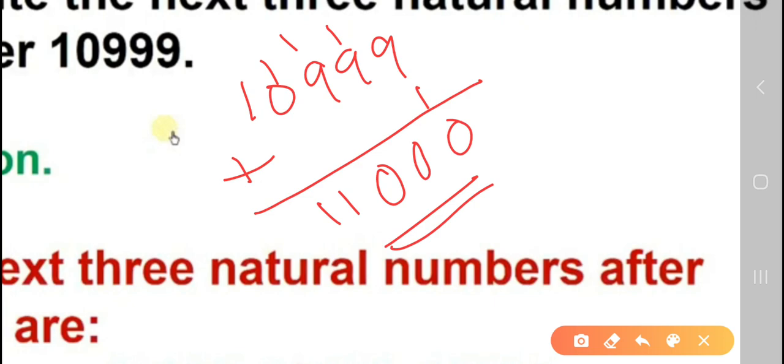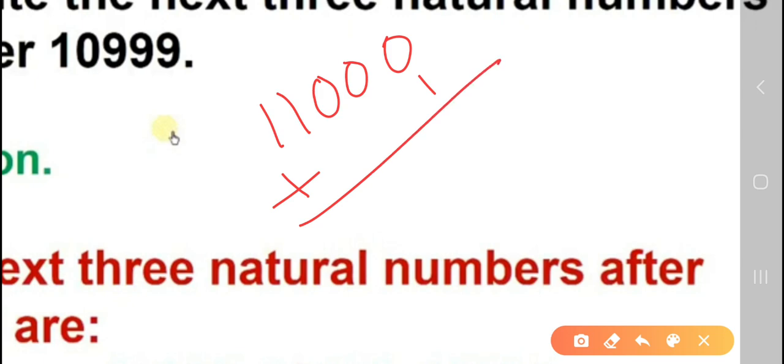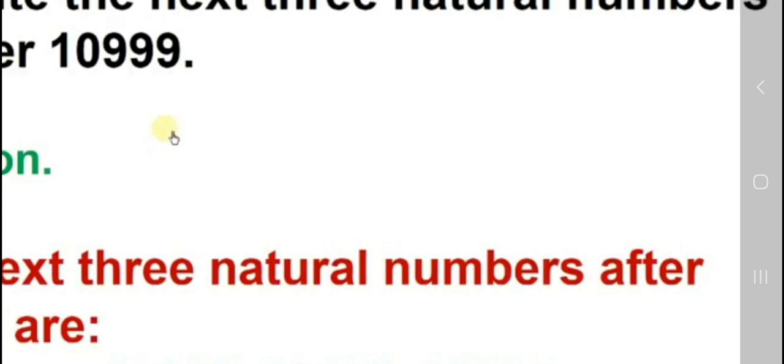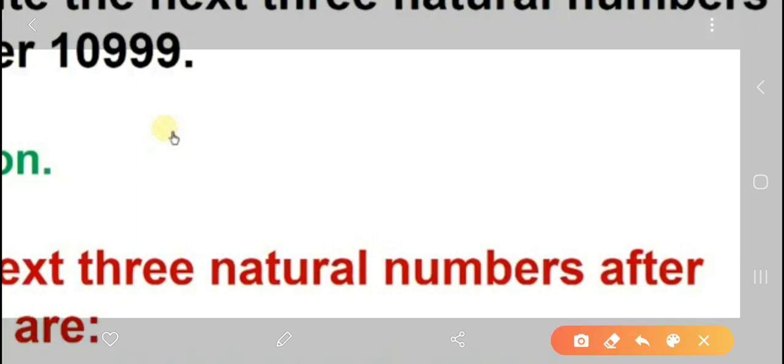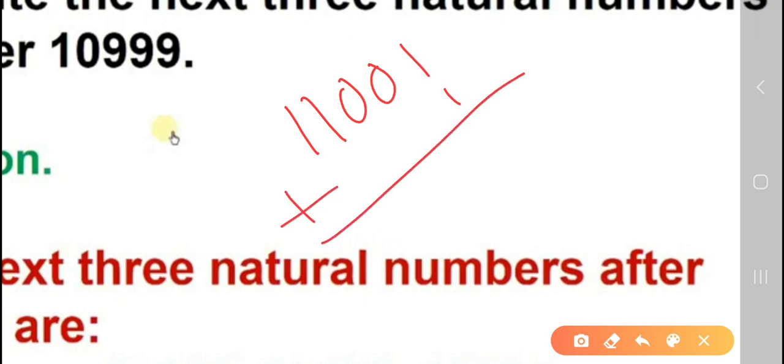Now, next number how to find? 11,000 plus 1. Again, 11,000 you are taking plus 1 you will do. So, how much you will get? 11,000 and 1. Now, you want to find the next number. So, 11,001 plus 1. It will be 11,001 plus 1. It will be 11,002.